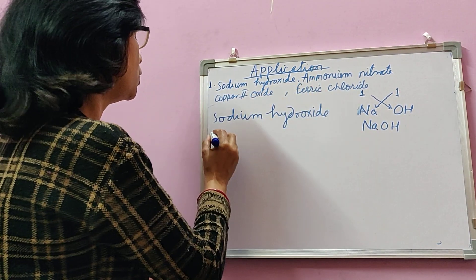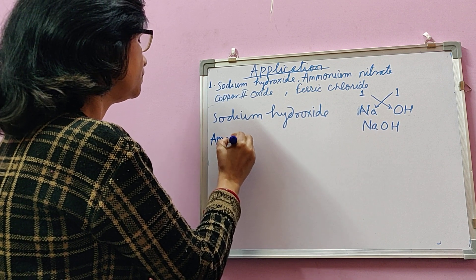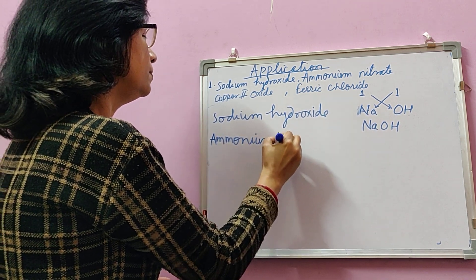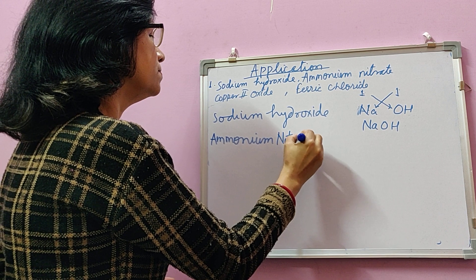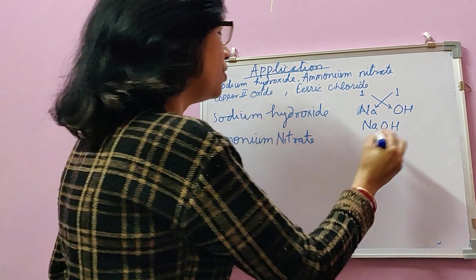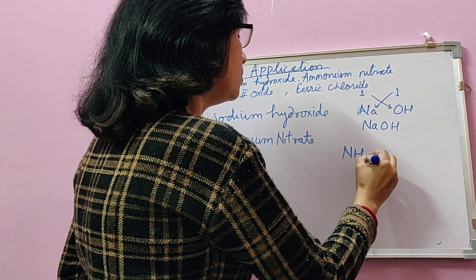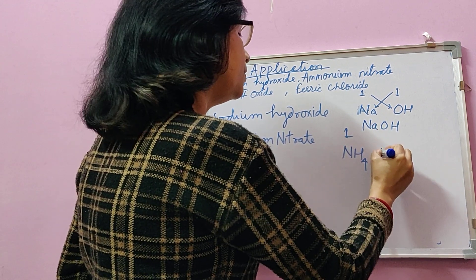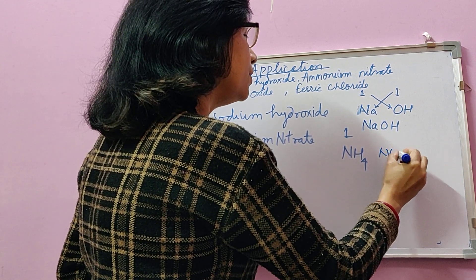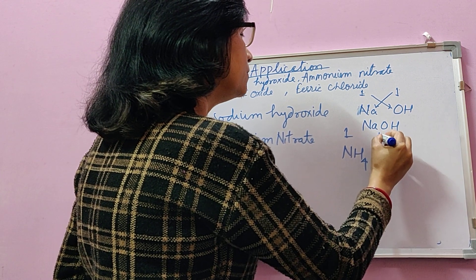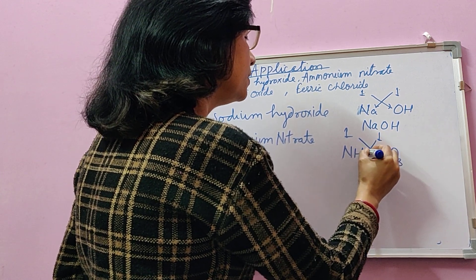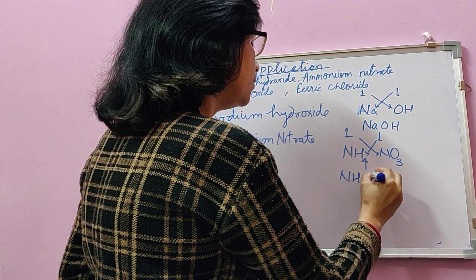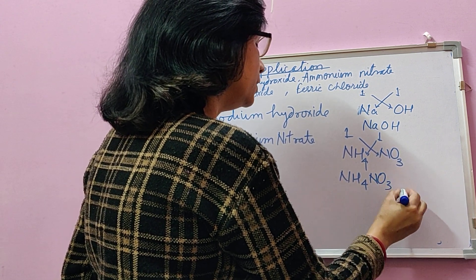Second is ammonium nitrate. Ammonium (NH₄) has a valency of +1, and nitrate (NO₃) has a valency of −1. Applying the criss-cross method, since both valencies are 1, the formula is NH₄NO₃.